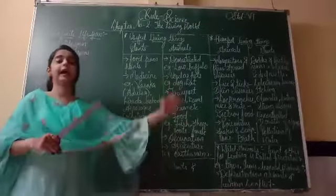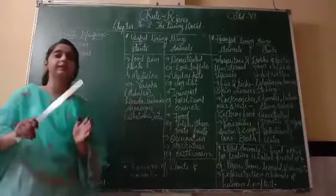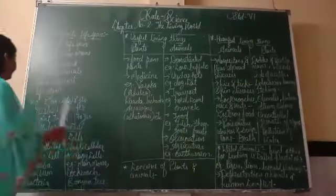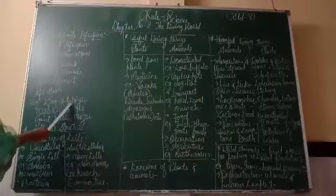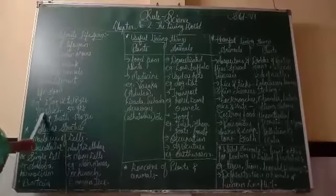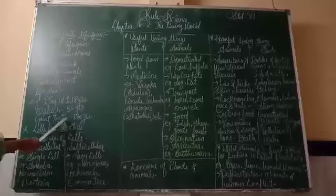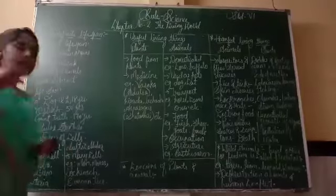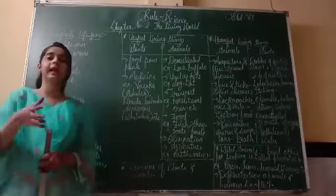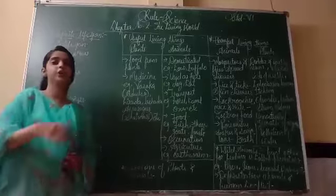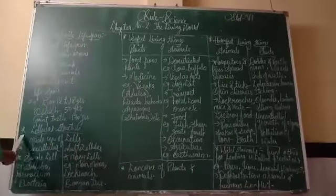Plants and animals cannot live forever — they also have a certain fixed life span. For example, a dog can live 12 to 18 years, an ostrich can live 50 years, and a giant turtle can live 170 years. So like human beings, all animals and plants also have their definite life span.